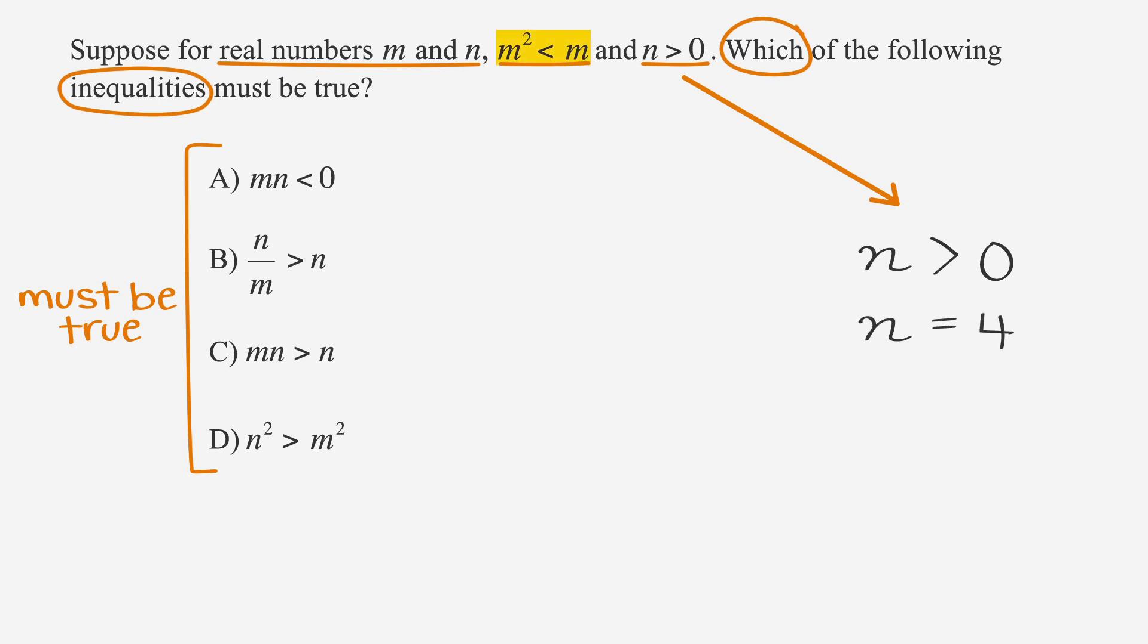Now we're told that m² is less than m. For that to be true, m needs to be a number between zero and one, because when you multiply a fraction by a fraction, you'll always get a smaller fraction.